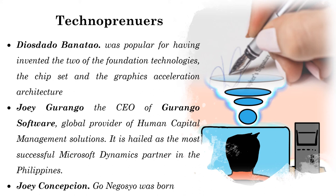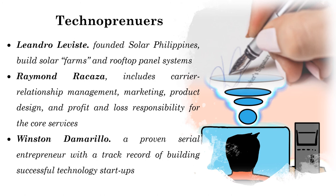We also have Joey Concepcion, who, with the help of other businessmen, founded GoNegosyo. GoNegosyo provides seminars for livelihood training, pamphlets, TV programs, and books, which consist of knowledge to help people establish their own businesses. One of the well-known technopreneurs is Leandro Leviste, who was only 23 years old when he founded Solar Philippines. The company provides solar power in business places, and he was able to build solar farms and a rooftop panel system.